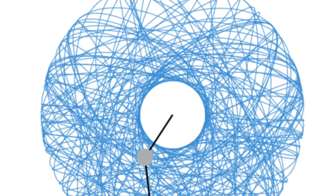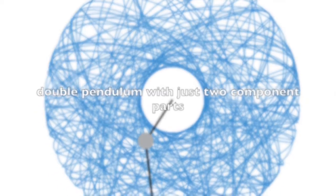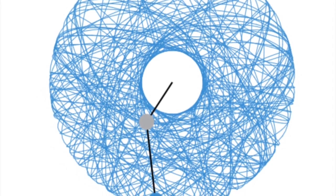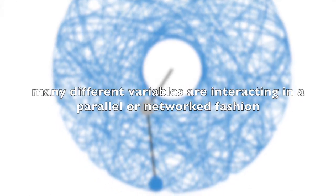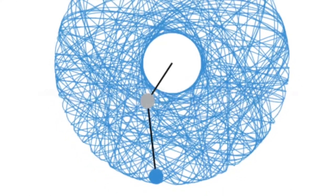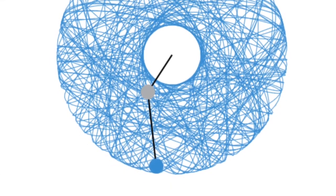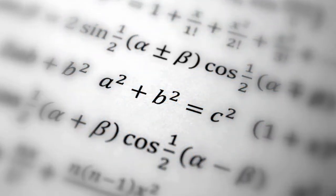Although nonlinearity can be observed in relatively simple systems composed of only a few elements, such as the canonical example of a double pendulum with just two component parts, it is though a key characteristic of complex systems where many different variables are interacting in a parallel or networked fashion to amplify or dampen down the results. Linear approaches take limited account of synergies and feedback dynamics.